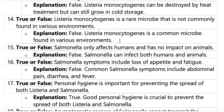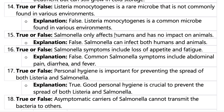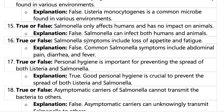Question fifteen: Salmonella only affects humans and has no impact on animals. False — it is a zoonosis, affecting both animals and humans. For example, when you pet dogs, cats, or any type of animal, you need to be careful. Bears, which eat salmon a lot, are also a type of animal that gets Salmonella frequently.